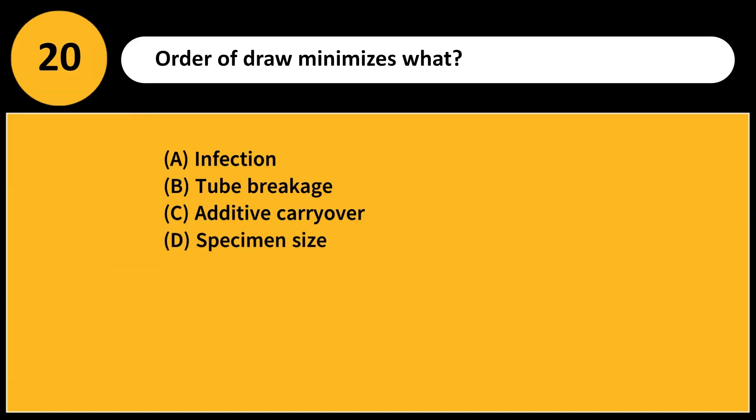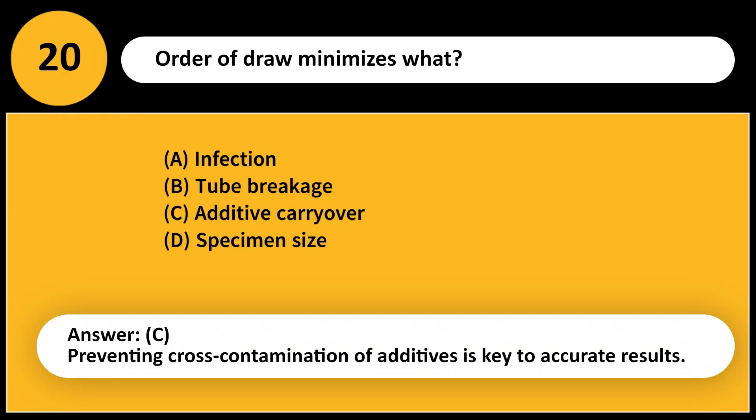Order of draw minimizes what? A. Infection. B. Tube breakage. C. Additive carryover. D. Specimen size. Answer: C. Preventing cross-contamination of additives is key to accurate results.